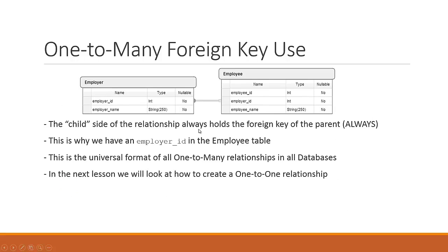The child side of the relationship always holds the foreign key of the parent. So the employer ID lives in the employee table — this is a universal format for all one-to-many relationships in all databases. Remember: the foreign key of the parent table always lives inside the child table, and the child table will have its own primary key separate from the foreign key.